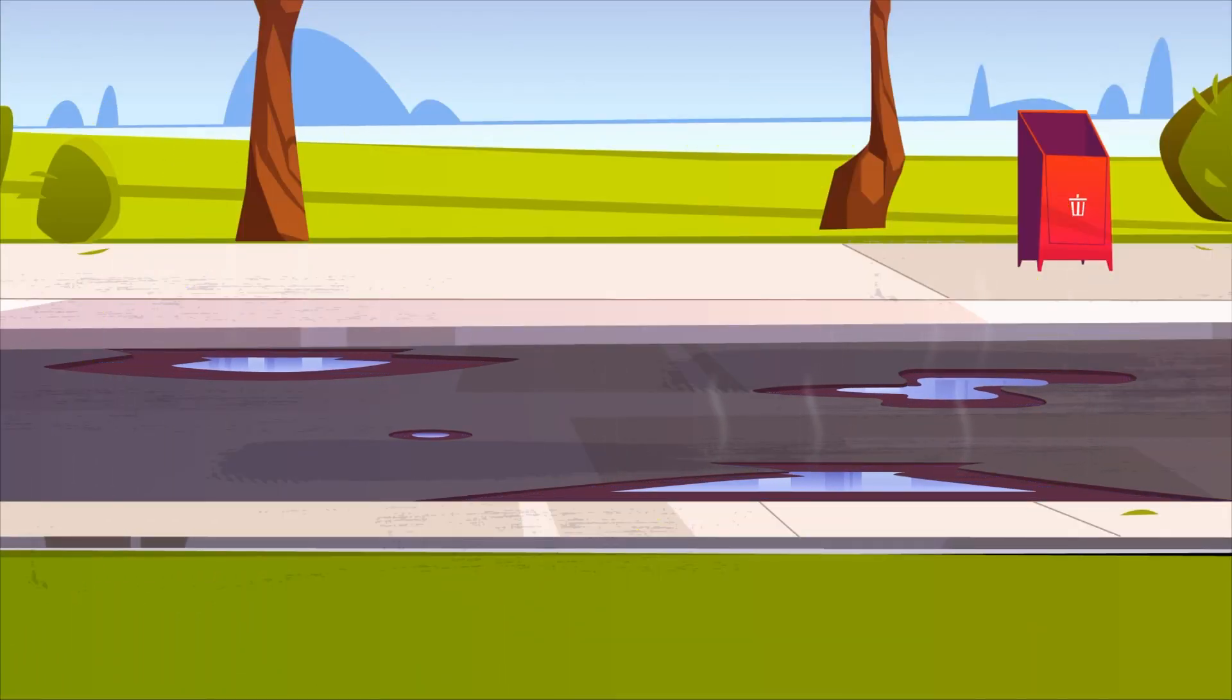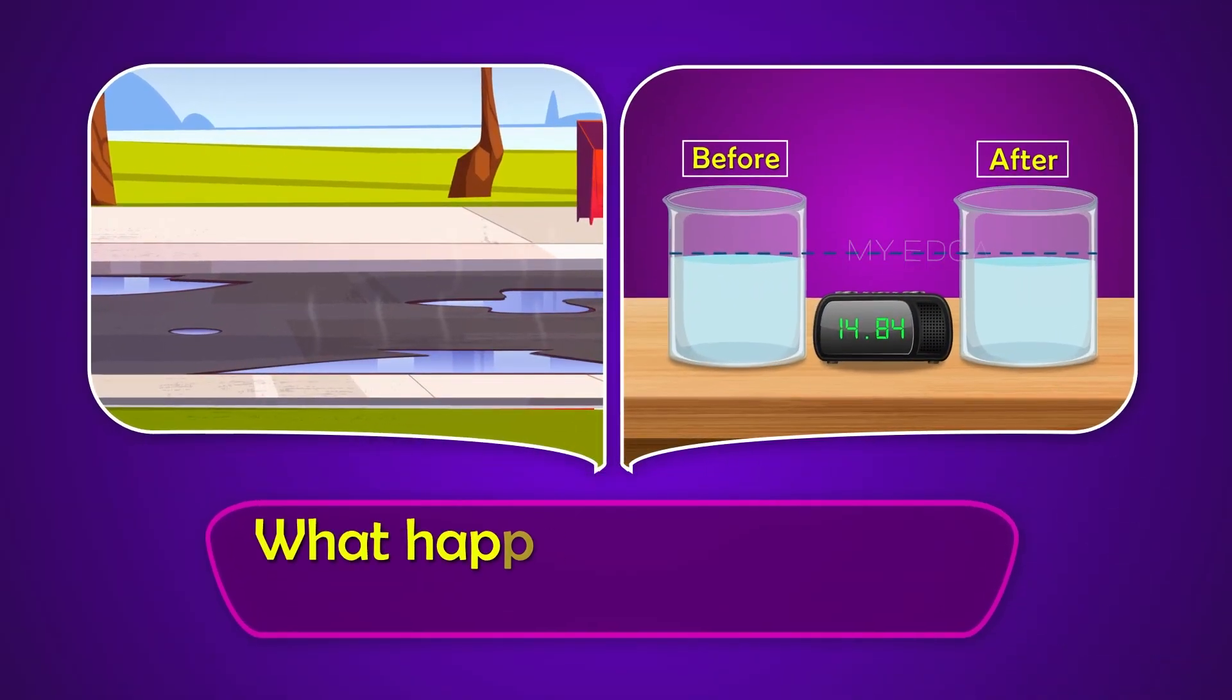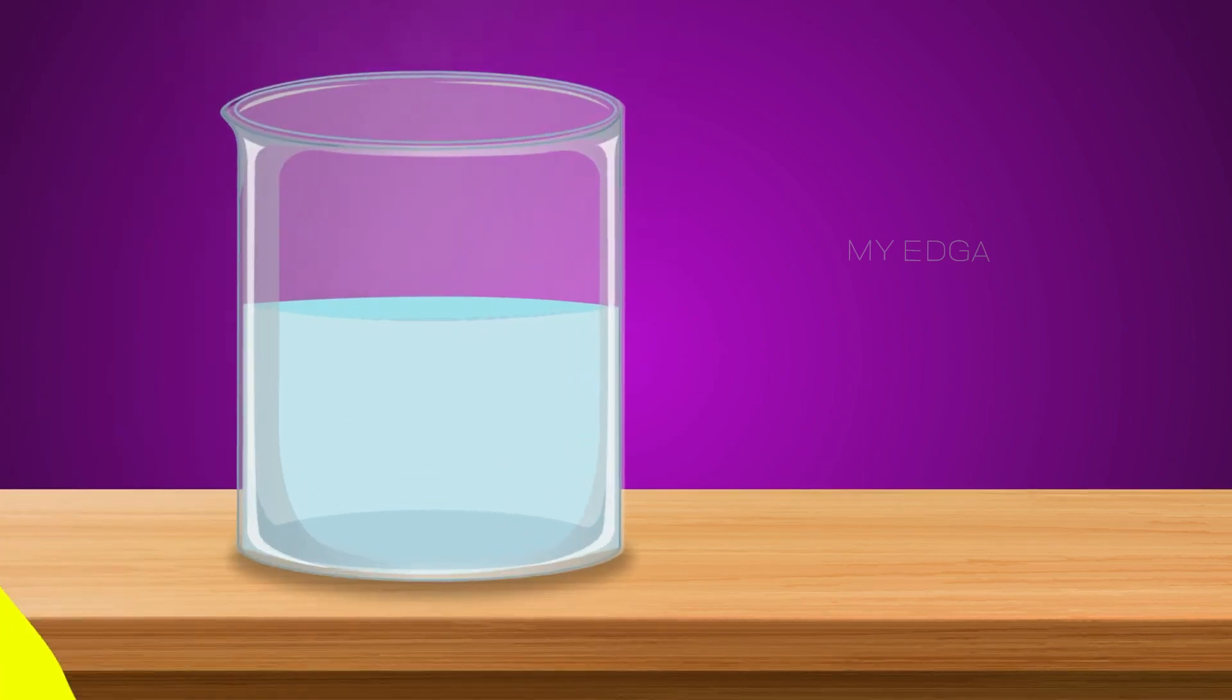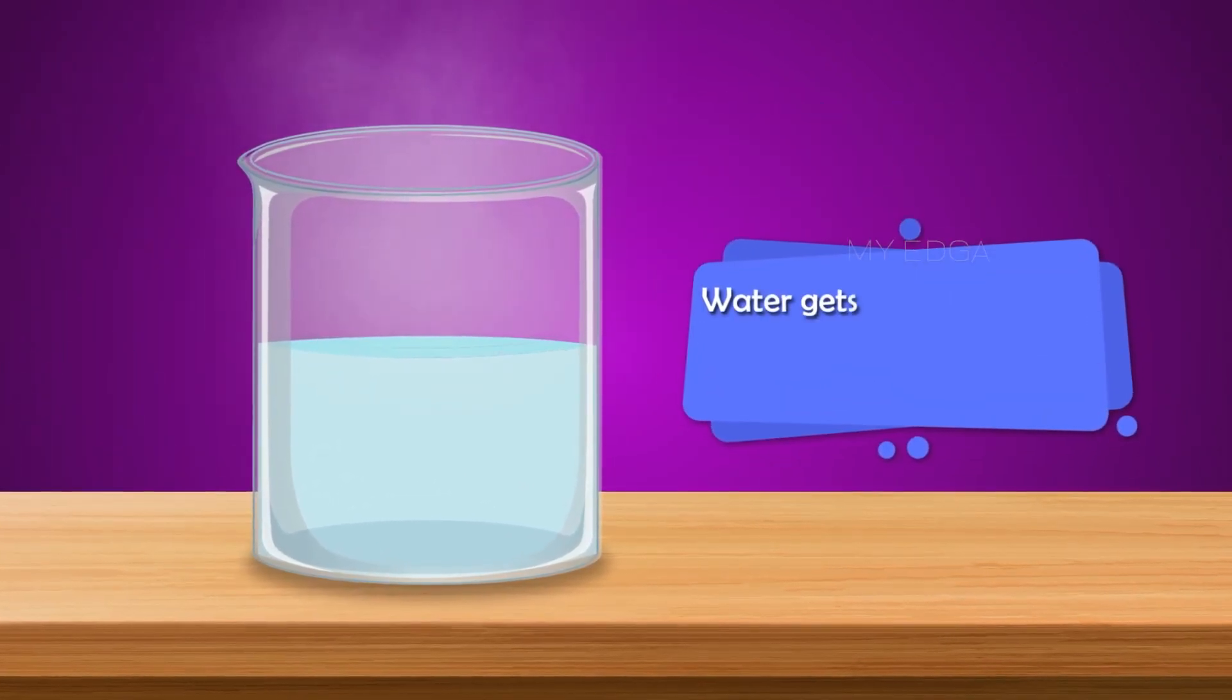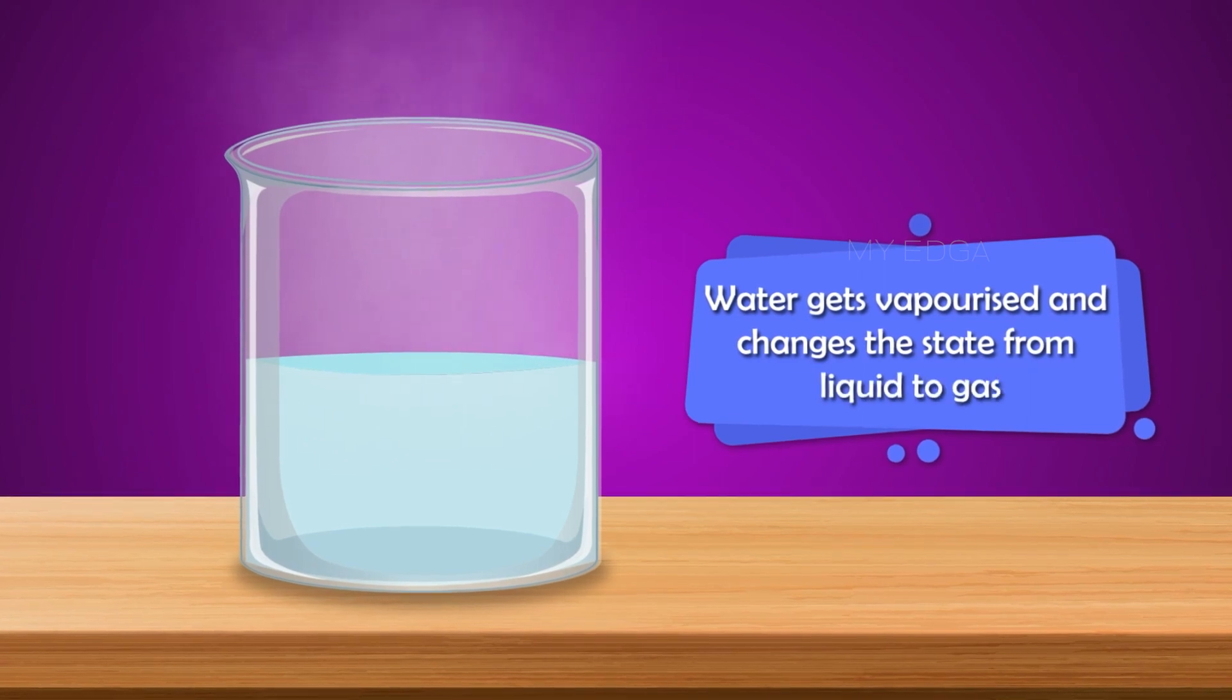You might have noticed that puddles disappear after some time and the level of water in a glass decreases when we keep it uncovered for a long time. What happens to the water in these cases? Here, water gets vaporized and changes the state from liquid to gas.